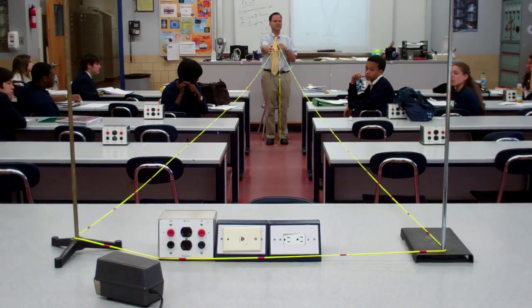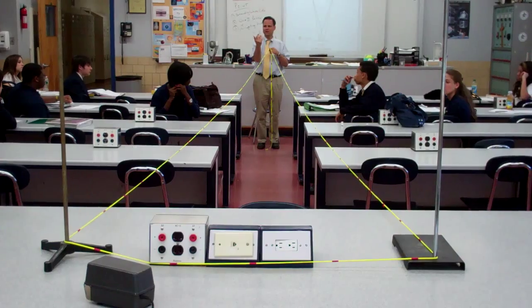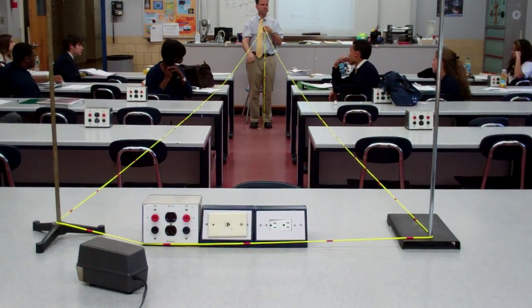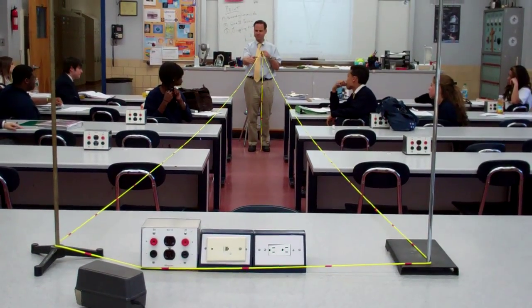So if the red markings are the crest, Stephen, everyone look at it this way. If the red markings are the crest, where are the troughs? That'd be right in the middle, right?